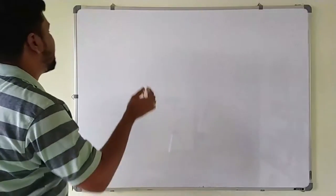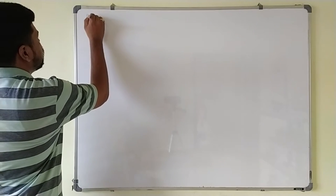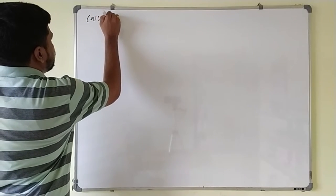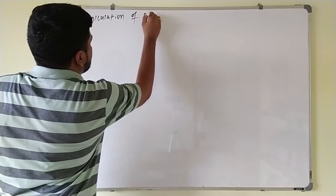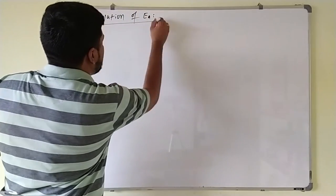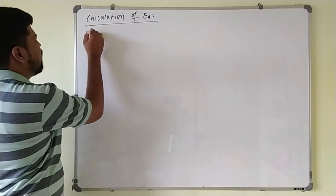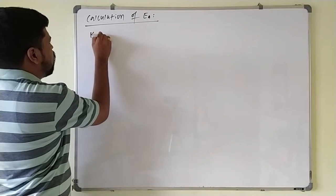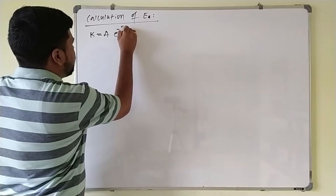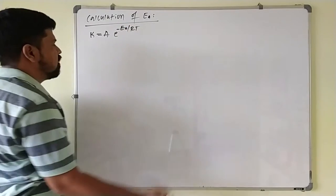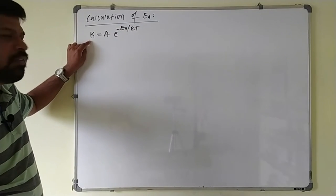Let's get started. Calculation of activation energy using the Arrhenius equation. Already we know that the Arrhenius equation is: the rate constant k equals A into e raised to minus Ea divided by RT. Here, k is the rate constant or rate of the reaction.